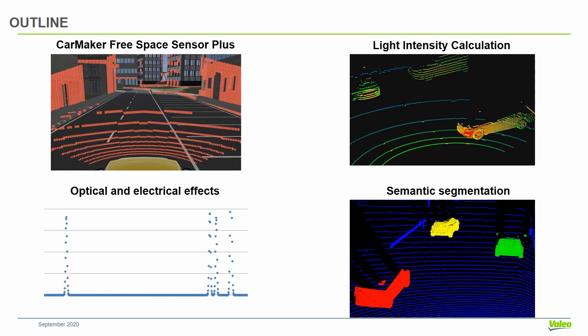This is the outline of the presentation. First I will give you an overview of what the FreeSpace Sensor Plus can do, what kind of output it can provide, and what are the limitations of the sensor. Then we can discuss how we can calculate the intensity of light from the output of FreeSpace Sensor Plus, and discuss some optical and electrical effects like blooming and different electrical effects on the time-resolved waveform.